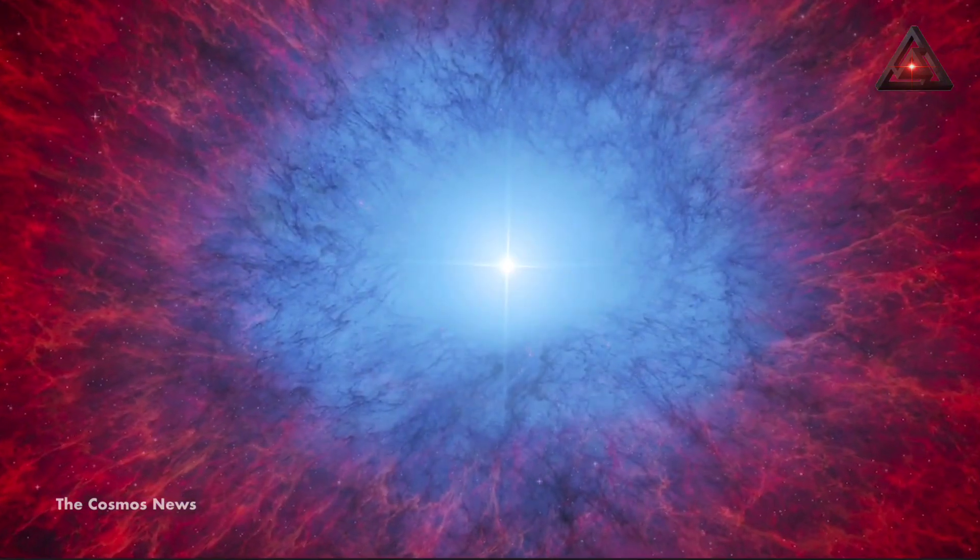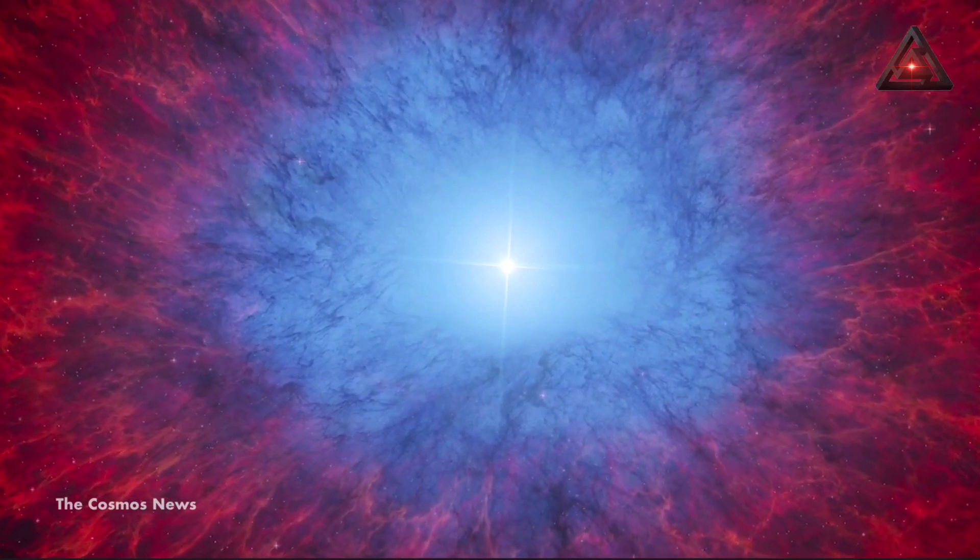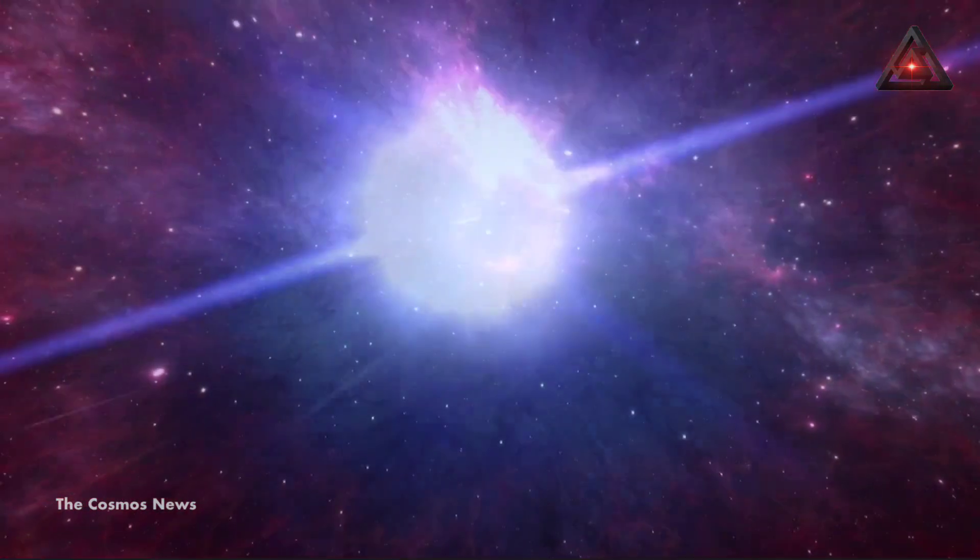But because white dwarfs are so much bigger in mass than neutron stars, they would take longer to spin around and could achieve a rotation rate like the one observed from GPM J183910.